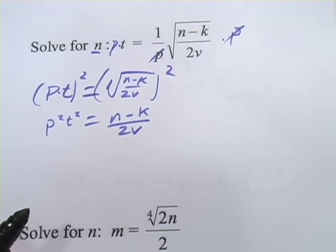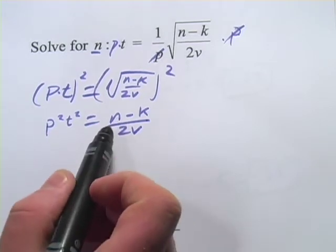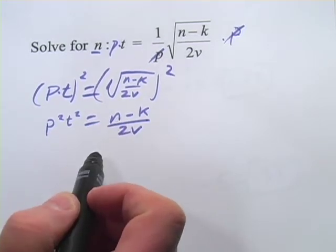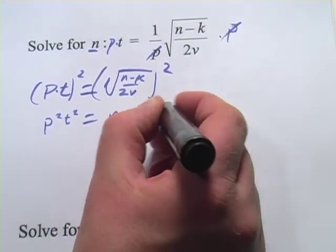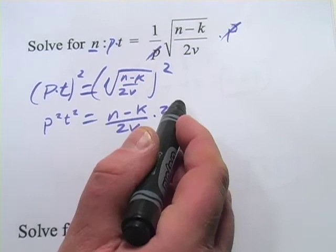We're a lot closer to solving for n now. What I notice now is that n is on the top of a fraction, so I want to get rid of this denominator. And I'm going to do that simply by multiplying both sides by 2v. They'll cancel over here.